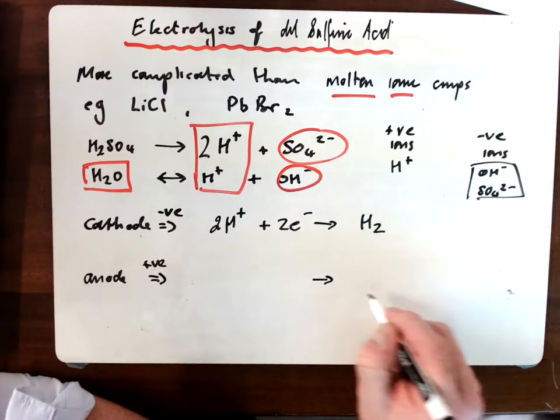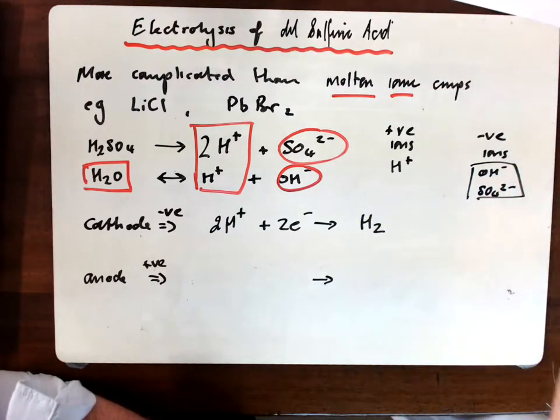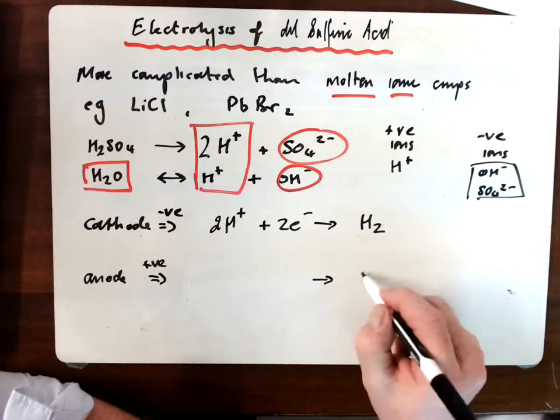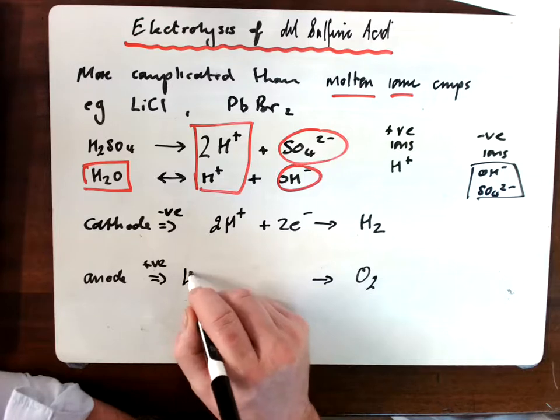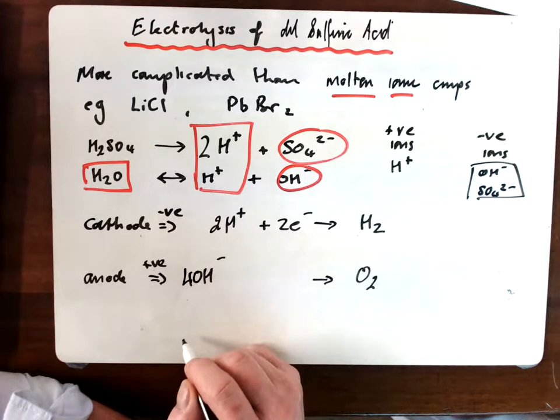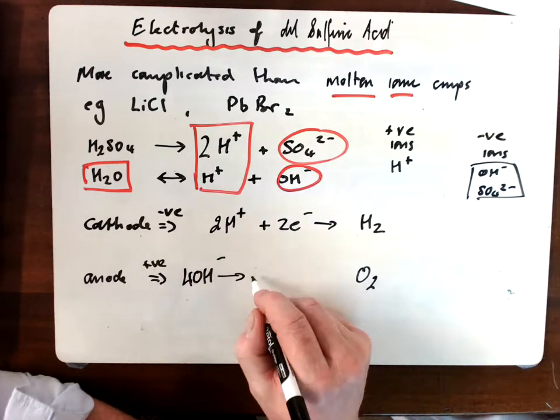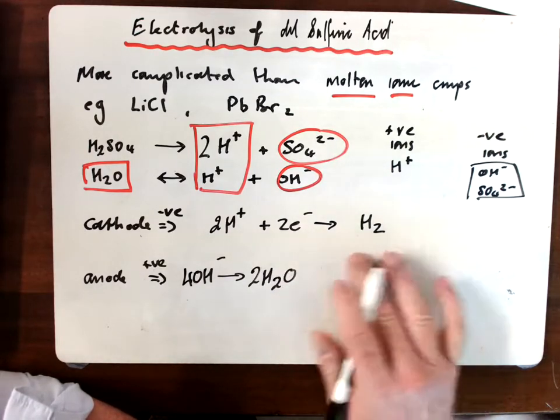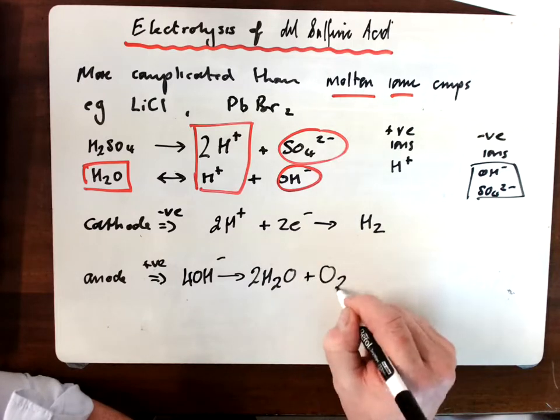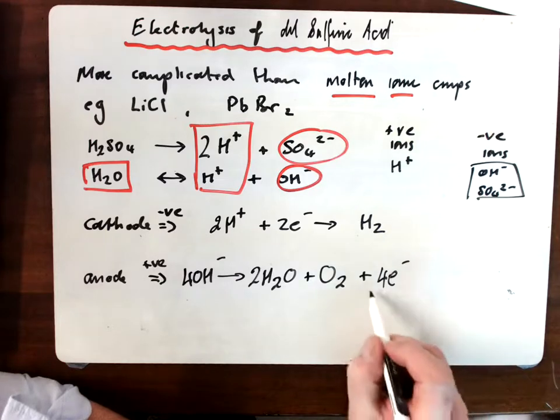I will get some oxygen gas, and that comes from my hydroxide ions. I need four of those to balance this out. I get two waters as a product of that, my oxygen gas, and I will get four electrons. Now that four electrons is important.